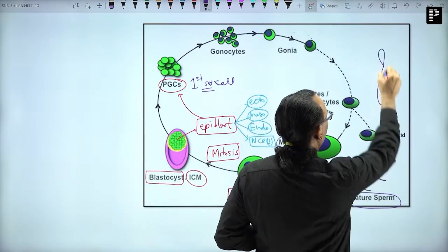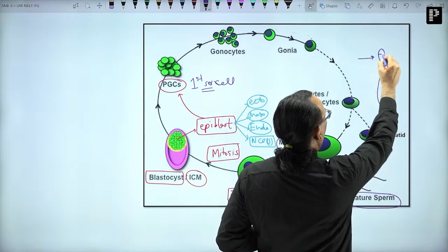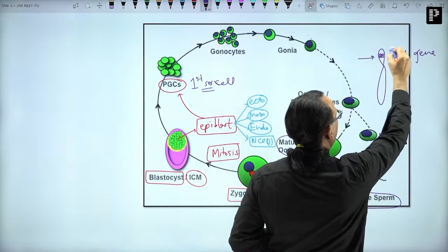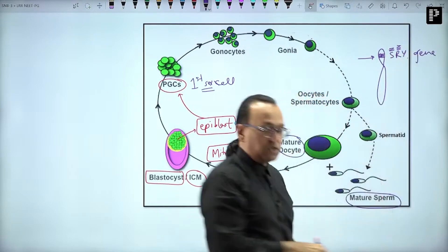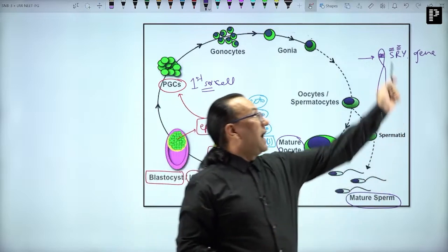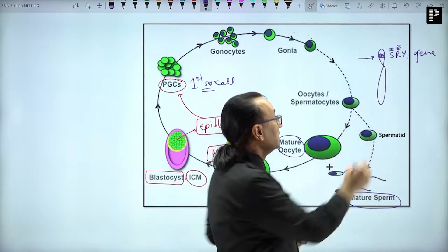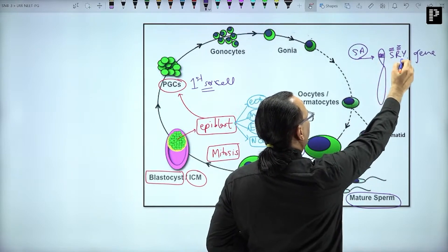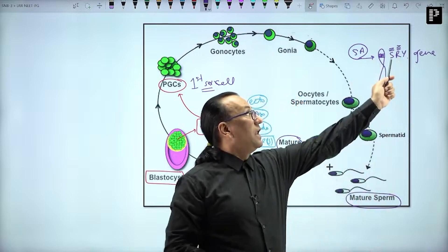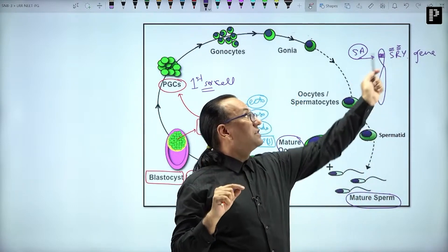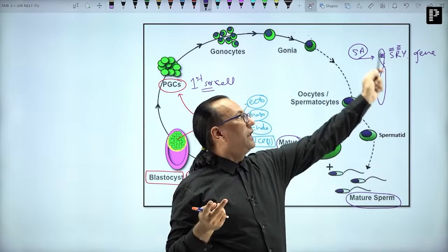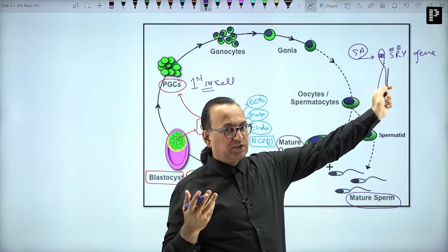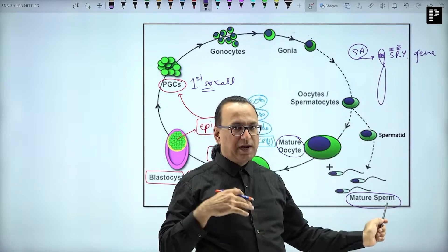There is an acrocentric chromosome which is the Y chromosome, and on the short arm of Y chromosome you have a gene which is called SRY gene. S is sex, R is region, Y chromosome. There is SRY gene, and it will decide whether you will be male or female. If you have SRY gene you will become a male, and if you don't have SRY gene then you will become a female.